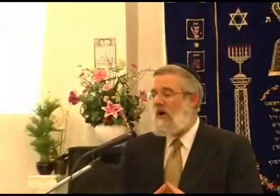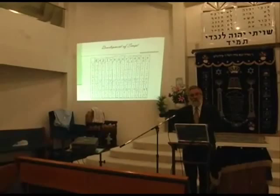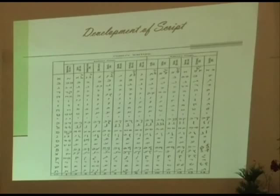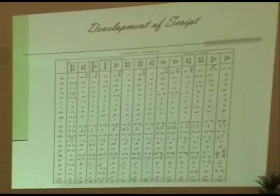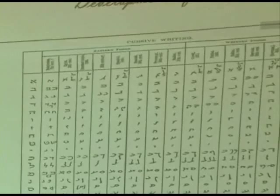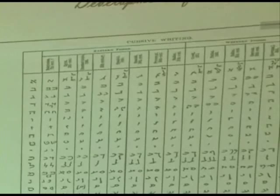We saw how Lashon HaKodesh originally looked in the old form called Ketav Ivri. However, there was a second Ketav called Ketav Ashuri that I'll talk about more at length. What we don't know yet — according to non-Jewish sources — is which one came first. They will tell you Ketav Ivri was always there from the very beginning, and that Ketav Ashuri — the square script Jews use today — came about later. They even tried to prove it from the Gemara. We're going to discuss the timing of these scripts soon.